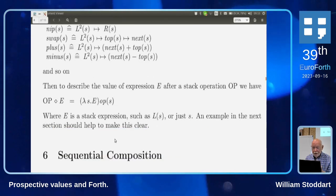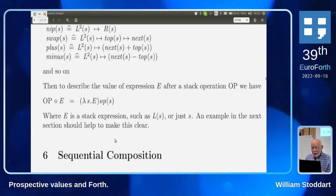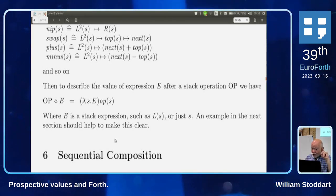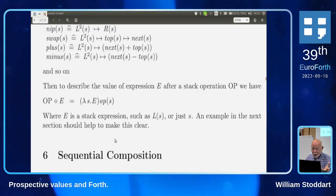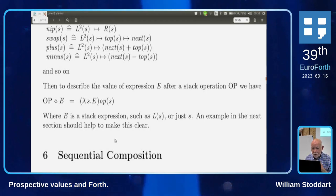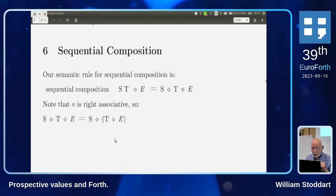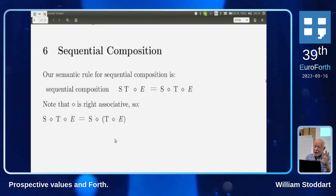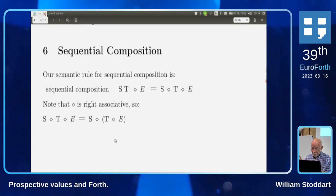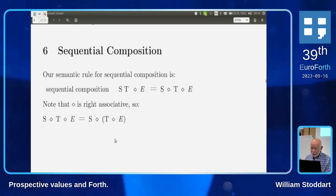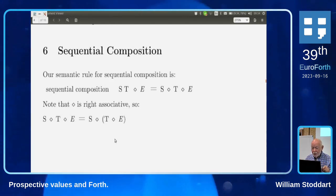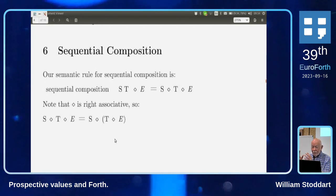Sequential composition in Forth is simply 's t' — two words side by side; very simple, wonderful. The semantic rule for 's t ◇ e' is 's ◇ (t ◇ e)' — a very strange rule. The diamond is right-associative. s and t are programs; 't ◇ e' is not a program but an expression describing the rest of the computation. To handle this we use a very unorthodox mathematics, not invented by us but by Rick Hayner in Canada.